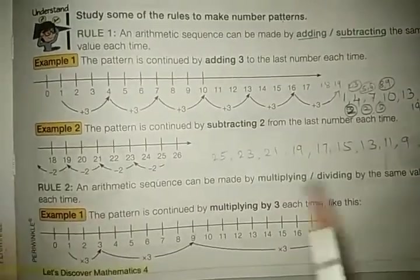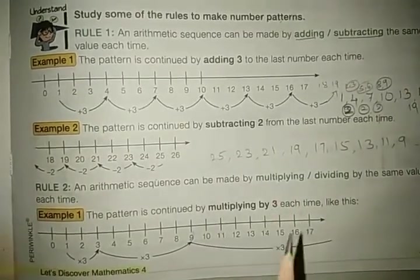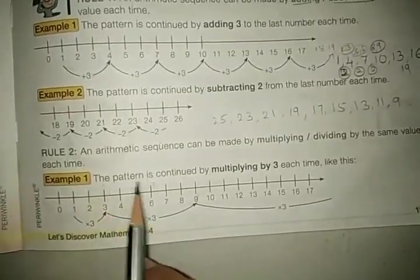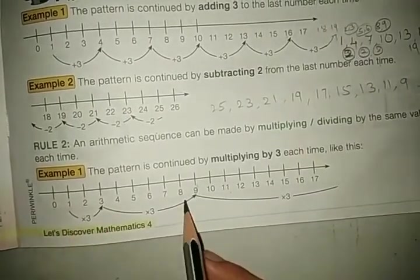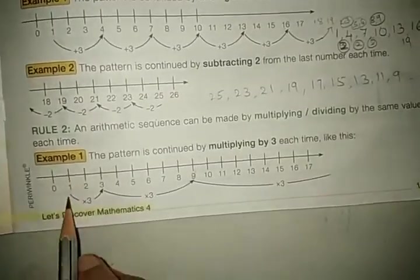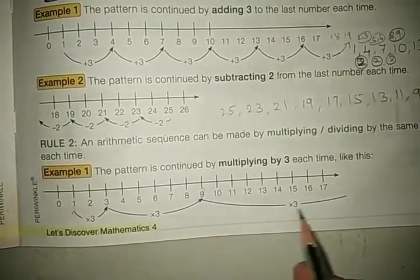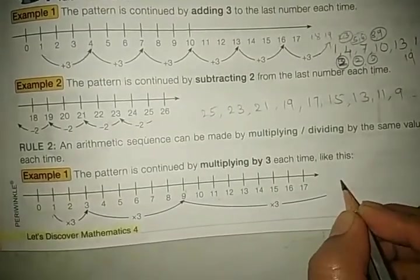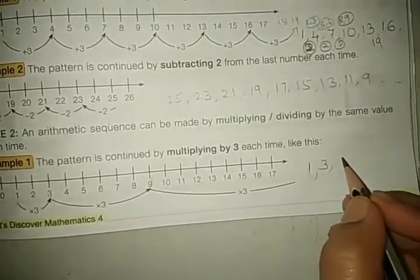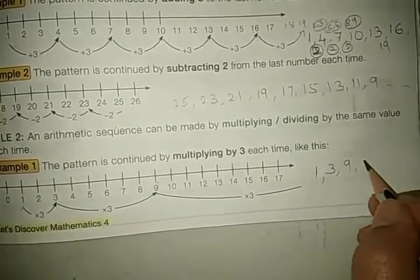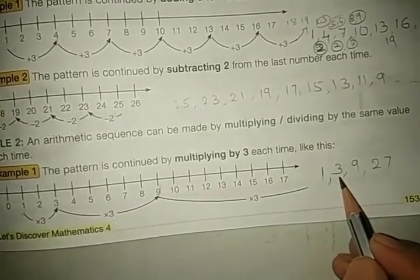Now see the next rule: an arithmetic sequence can also be made by multiplying or dividing by the same value each time. Each time we divide or multiply with the same number. For example, the pattern is continued by multiplying by three each time. They started with one: one times three is three, three times three is nine, nine times three is twenty-seven. Each time they multiplied the last number by three.